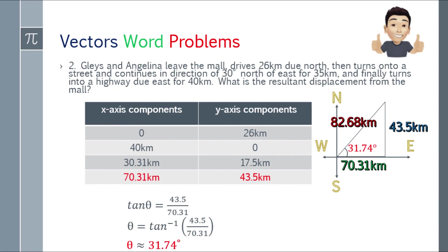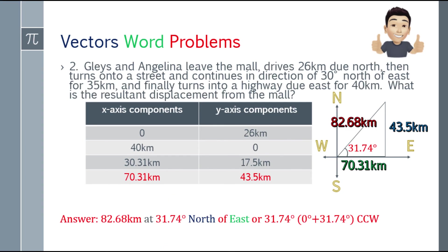For the angle: tangent theta = 43.5 over 70.31. Arc tan of that gives 31.74 degrees — that's our angle, north of east. So the answer will be 82.68 kilometers at 31.74 degrees north of east, or 31.74 degrees CCW.